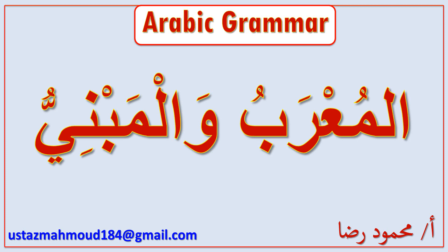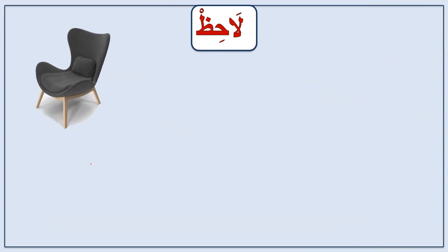Assalamu alaikum. In this video you are going to learn a basic Arabic grammar lesson you must learn: how to make al-i'raab. This lesson is called al-mu'rabu wal-mabniyu. Let's take a simple example to understand what the meaning of al-mu'rabu and al-mabniyu is.